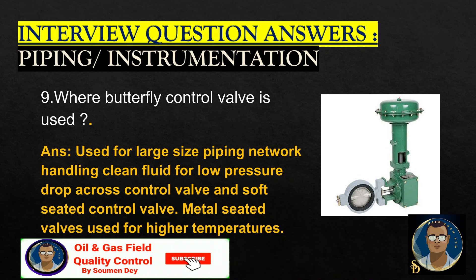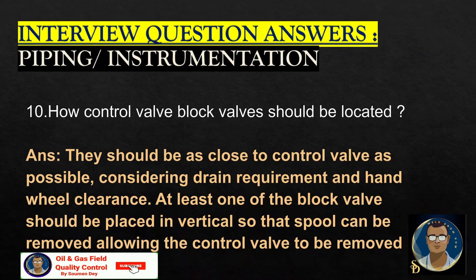Where is a butterfly control valve used? Butterfly control valves are used for large-size piping networks handling clean fluid, for low pressure drop across the control valve. Soft-seated control valves and metal-seated valves are used for higher temperatures. How should control valves and block valves be located?